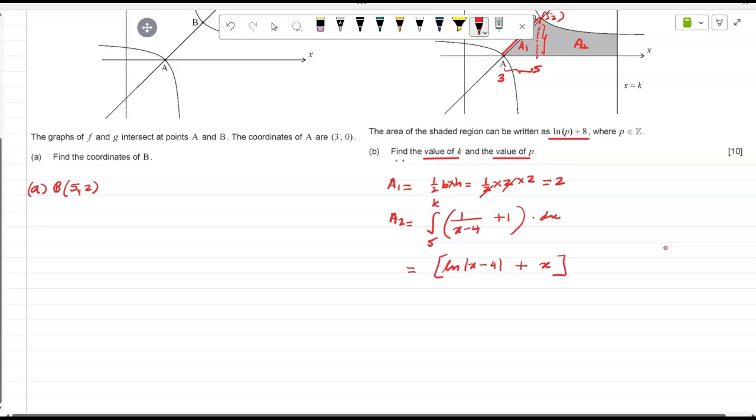So this is ln x minus 4, correct. Plus what is the integral of x, this is k to 5. So ln k minus 4 plus k minus, upper limit minus the lower limit, ln 1, correct, because 5 minus 4 is 1, plus 5. So ln k minus 4 plus k. Ln 1 is 0, so minus 5.